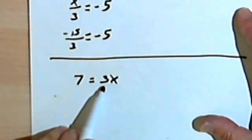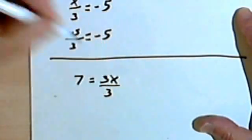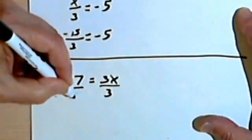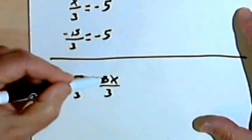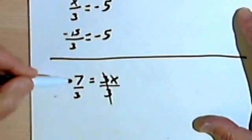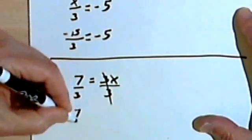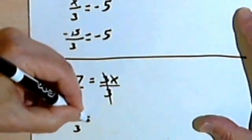I can do that by dividing by 3. So I'm going to divide the right side of the equation by 3, which means I want to divide the left side of the equation by 3. The right side is just going to give me an x. These 3s will cancel. The left side, 7 over 3, doesn't reduce. So I'm going to leave it as 7 over 3 equals x.